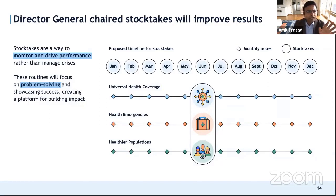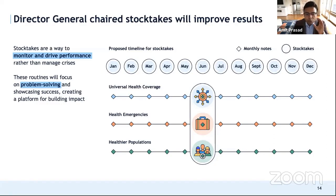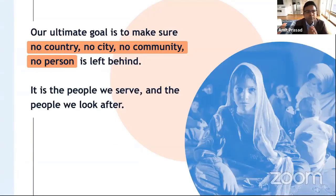WHO is conducting stock-takes to improve results, taking stock of progress on each of the indices in our 194 countries every few months and reporting at the highest levels — not just identifying problems, but finding and working together on solutions. These are chaired at the highest level so we can keep a close eye on what's happening. Our ultimate goal is to make sure no country, no city, no community, no person is left behind.